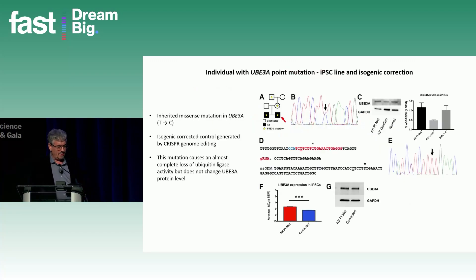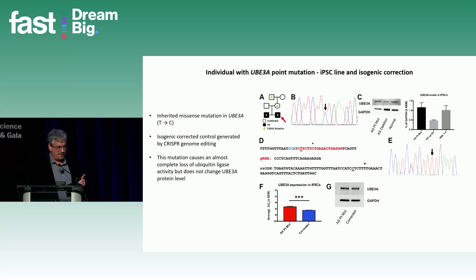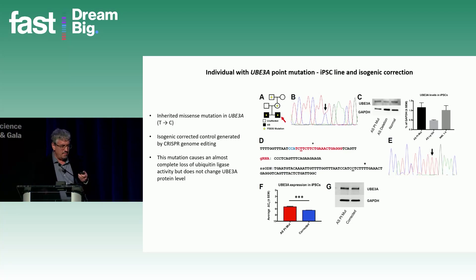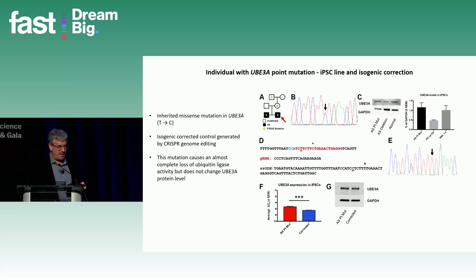One particular line I want to discuss is from an individual with a UBE3A mutation caused by just one misspelling — one incorrect letter in the UBE3A gene. This is actually an inherited form of Angelman: the mother had this mutation on her paternal allele, was unaffected, but passed it on to two children who developed Angelman as a result. This particular mutation does not prevent UBE3A from being made, but it completely blocks UBE3A's ubiquitin ligase activity — you have a UBE3A protein, but it's completely non-functional.